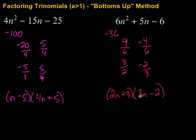Again, you can foil it back out to double check. 2n times 3n is 6n squared. 2n times minus 2 is negative 4n. Then 3n times 3 is 9n. Combine those two to get positive 5n. And finally, 3 times negative 2 is negative 6. So, again, factoring trinomials where the value of A, meaning the coefficient of the squared term, is larger than 1. We can use this method, often referred to as the bottoms up or AC method.